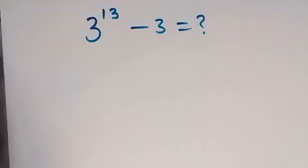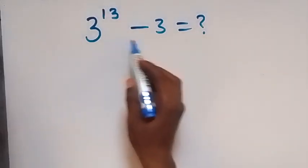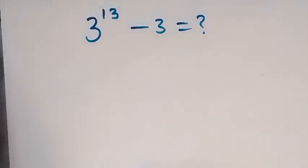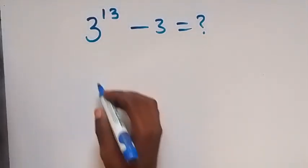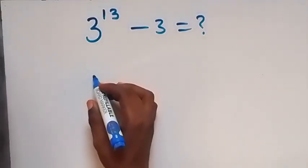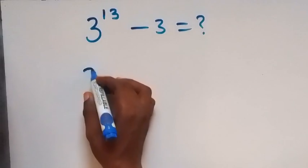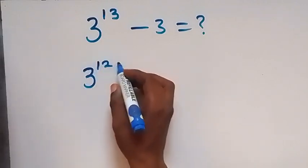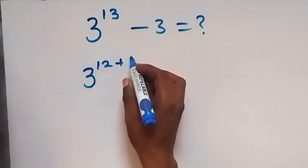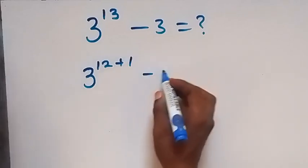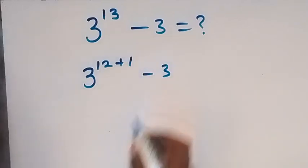Hello, you are welcome here. We want to solve this nice algebra problem. We have 3 raised to power 13 minus 3, and from here we can write this as 3 raised to power 12 plus 1, then minus 3.